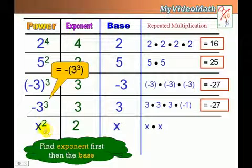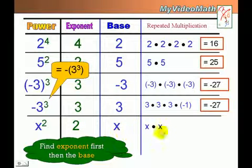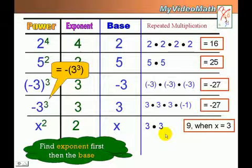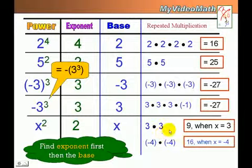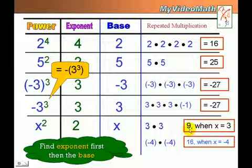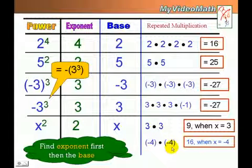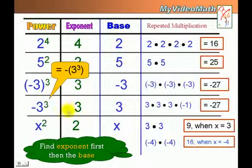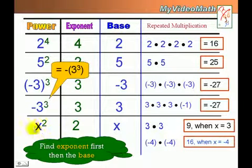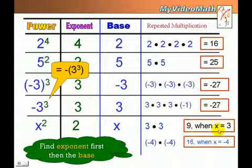For x squared, the exponent is 2, the base is x, and the factor form is x times x. When x equals 3, that becomes 3 times 3, which is 9. When x equals negative 4, it becomes negative 4 times negative 4, which is 16. So when a power has a variable in it, it does not have a value until we assign a value to the variable.